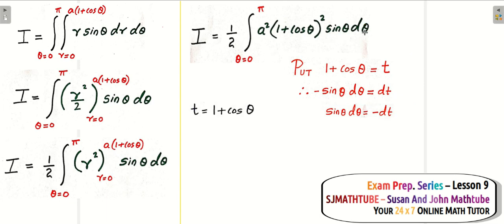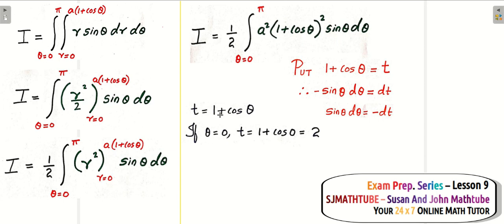One more thing: the variable of integration is theta, and theta varies from 0 to pi. Our new substitute is t, which equals 1 plus cos theta. When theta equals 0, t equals 1 plus cos 0 equals 1 plus 1 equals 2. When theta equals pi, t equals 1 plus cos pi equals 1 plus (minus 1) equals 0. If you don't know these values, use your calculator — but make sure you are in radian mode.